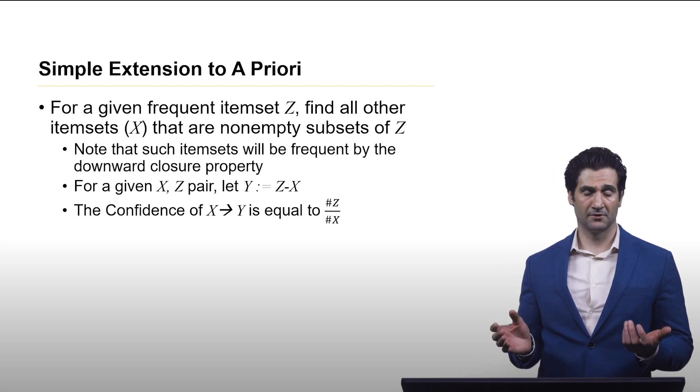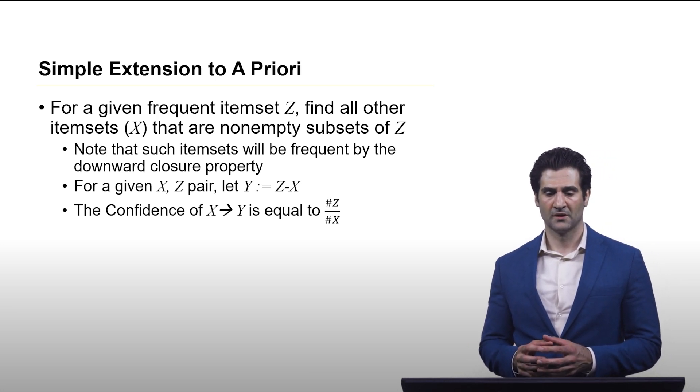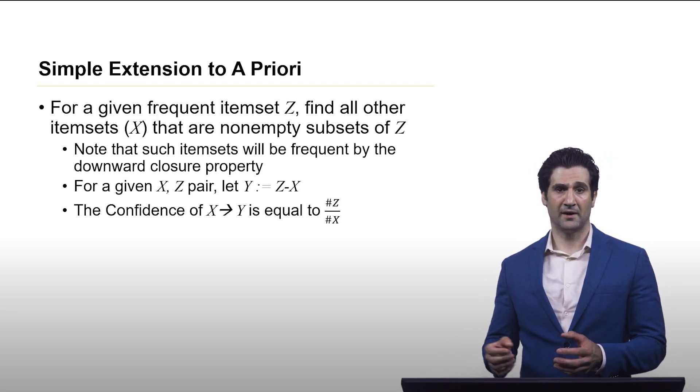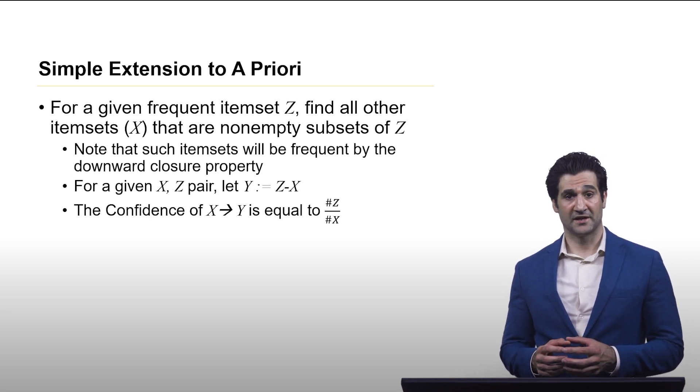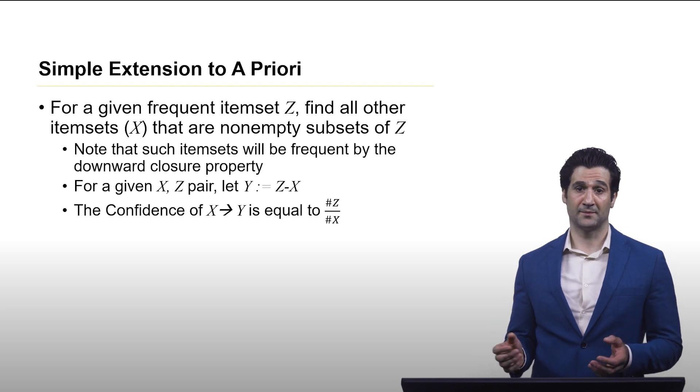So it's actually quite easy. Simple extension to a priori. If you have mined a given item set Z, simply find all other item sets X that are non-empty subsets of Z.